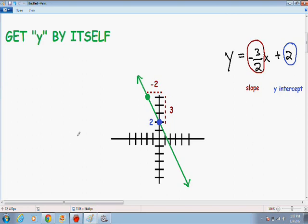And we also know that this line has a slope of negative 3 over 2. And what I like to do is go up 3 units because we have a 3 in the numerator. So we go up 3, 1, 2, 3.